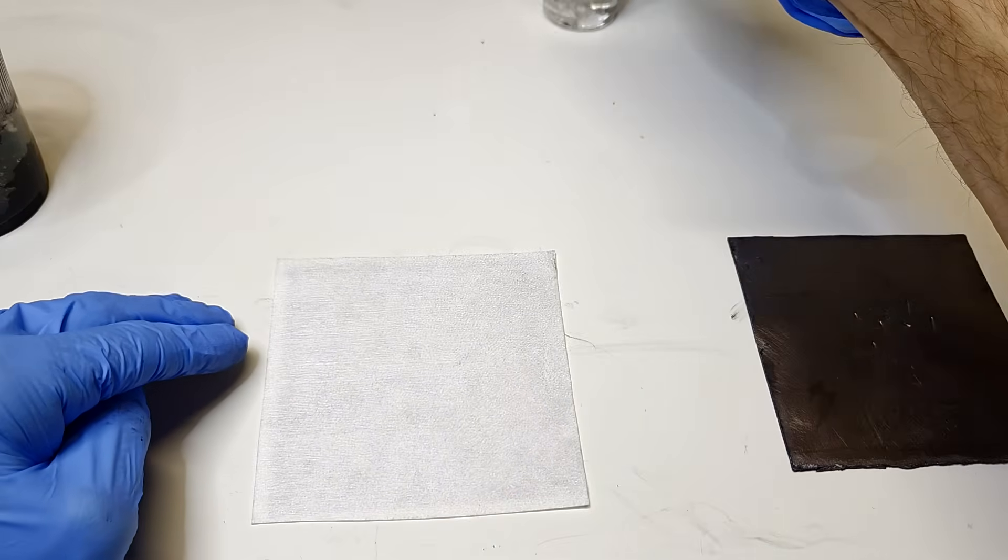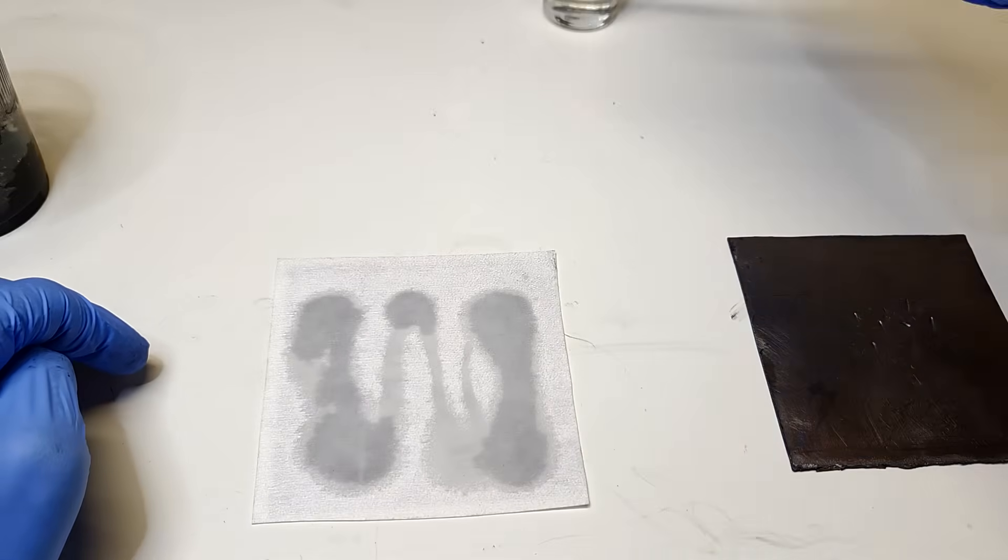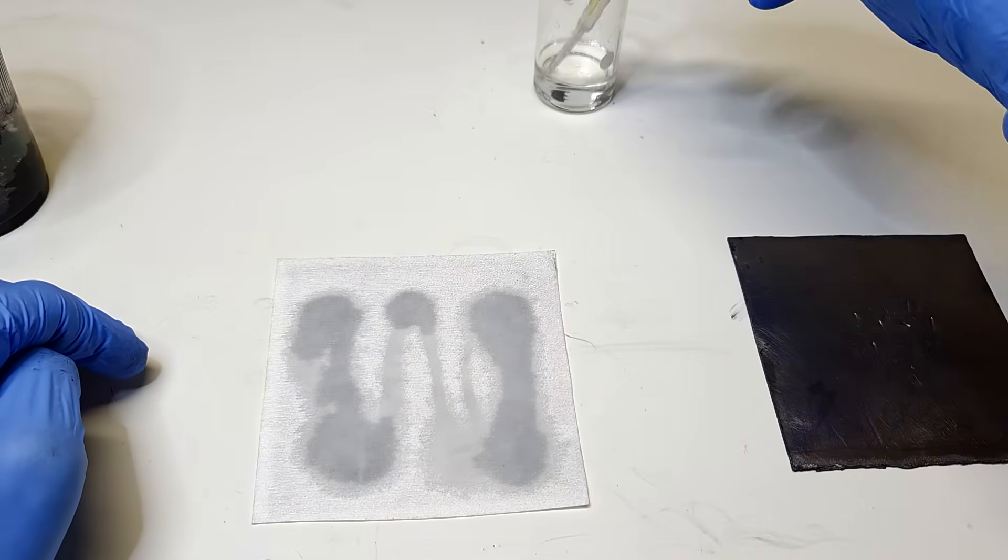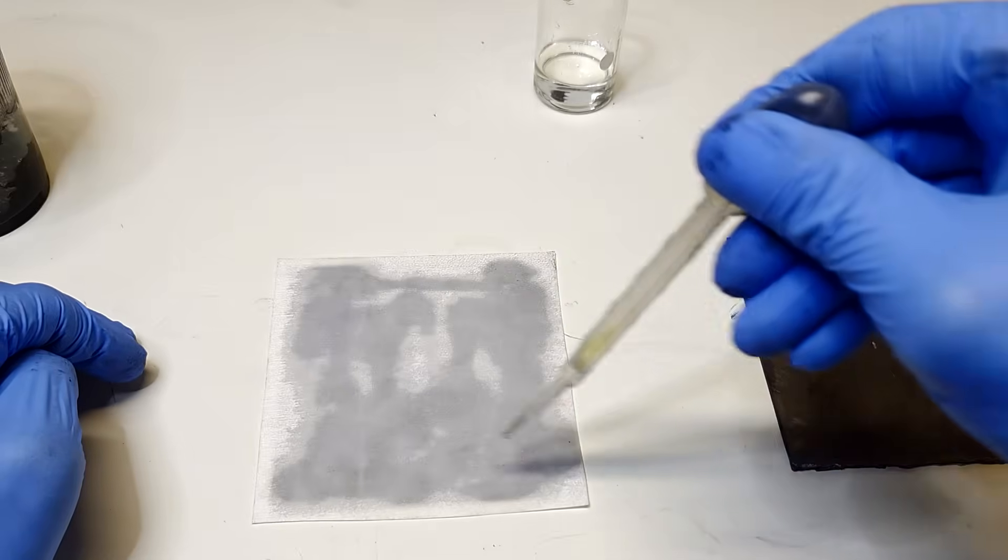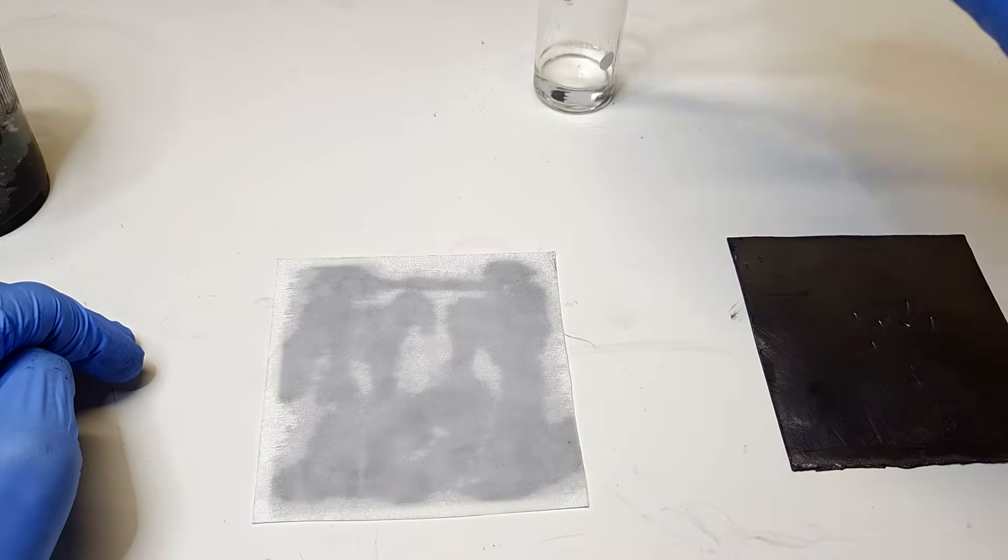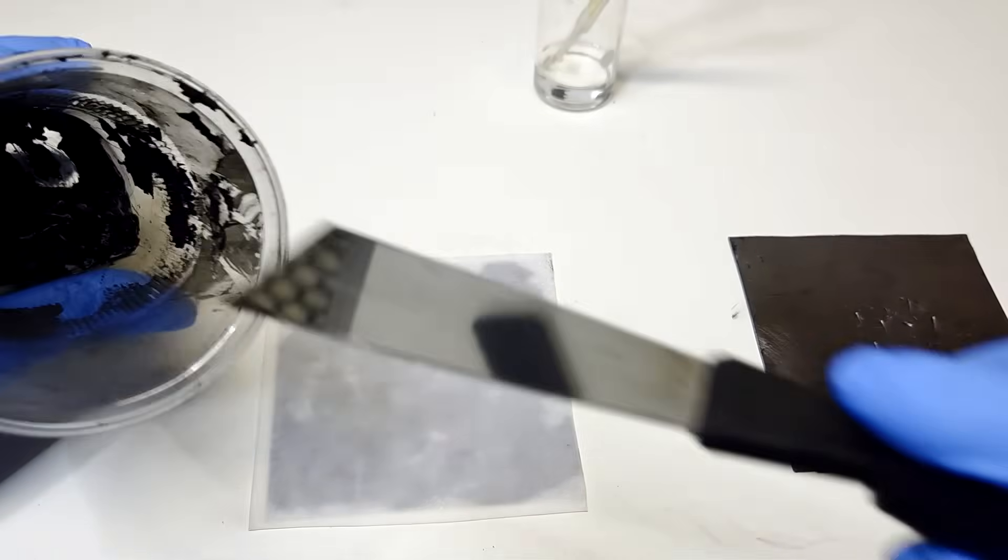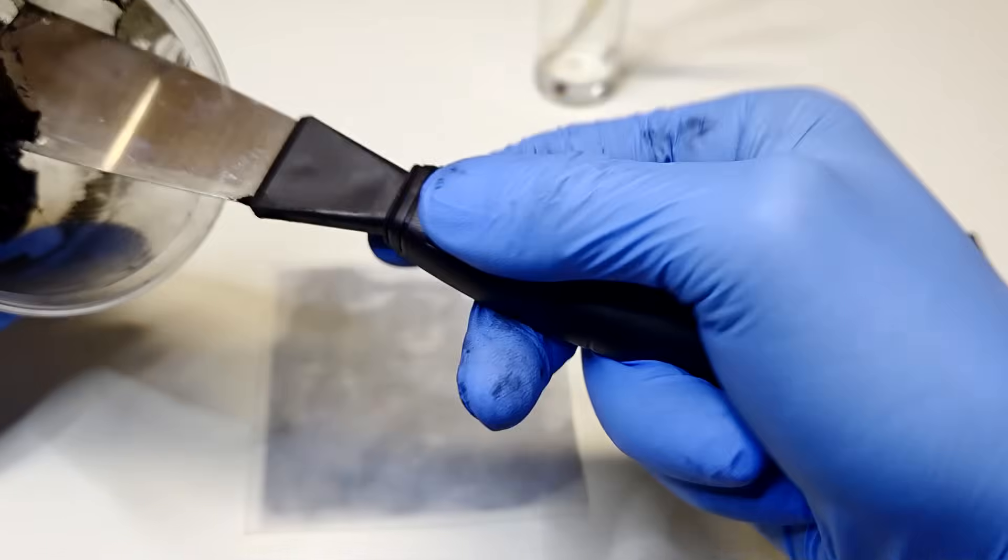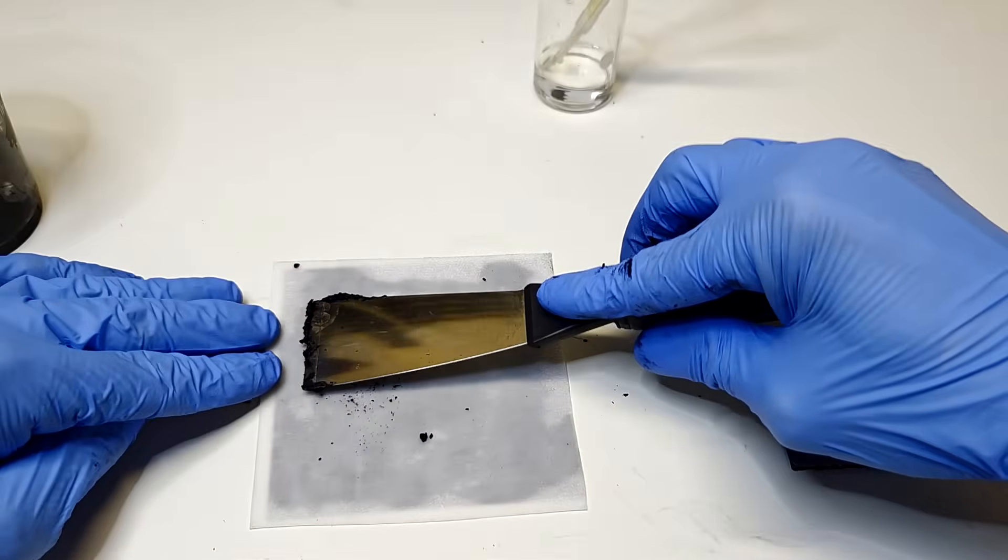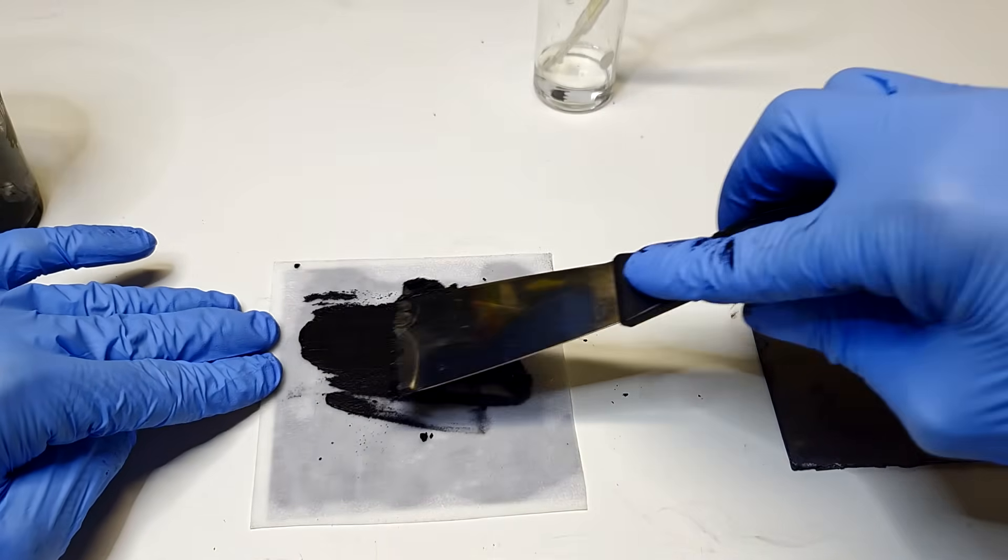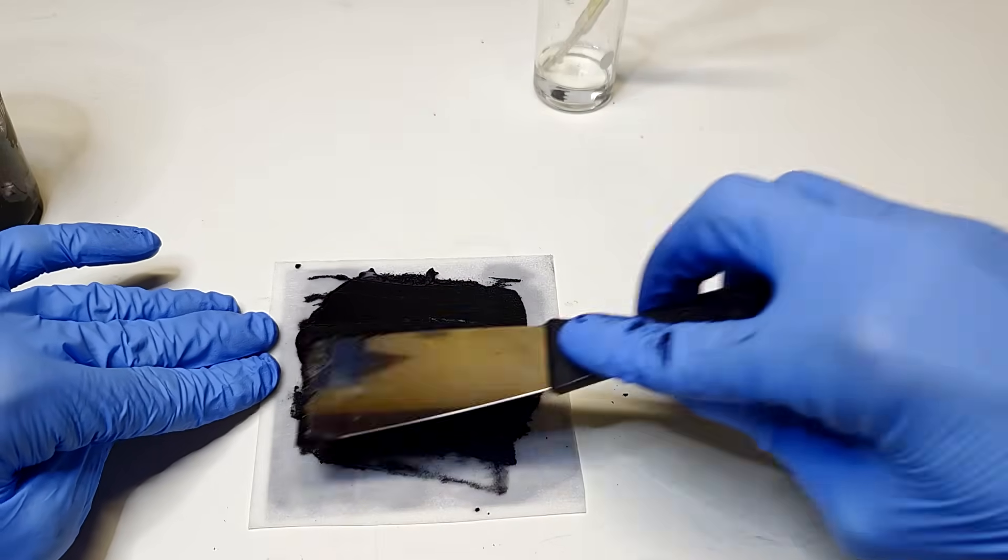Okay, so first I will add some electrolyte. And now on the separator I will add this activated carbon slurry.